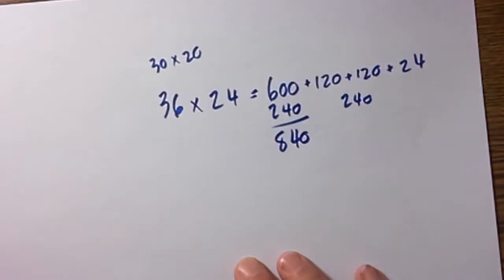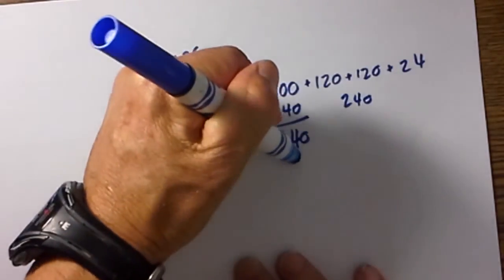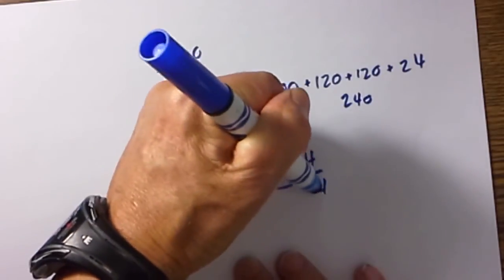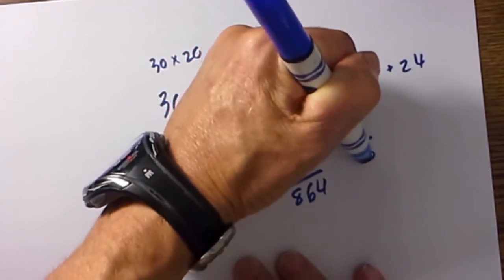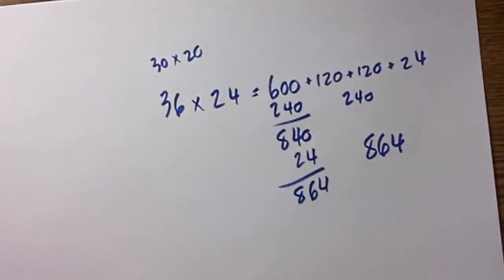Again you can see how multiplication is really pretty easy because you have so many zeros. Then we go 24 and that will be 864. So our answer for 36 times 24 is 864.